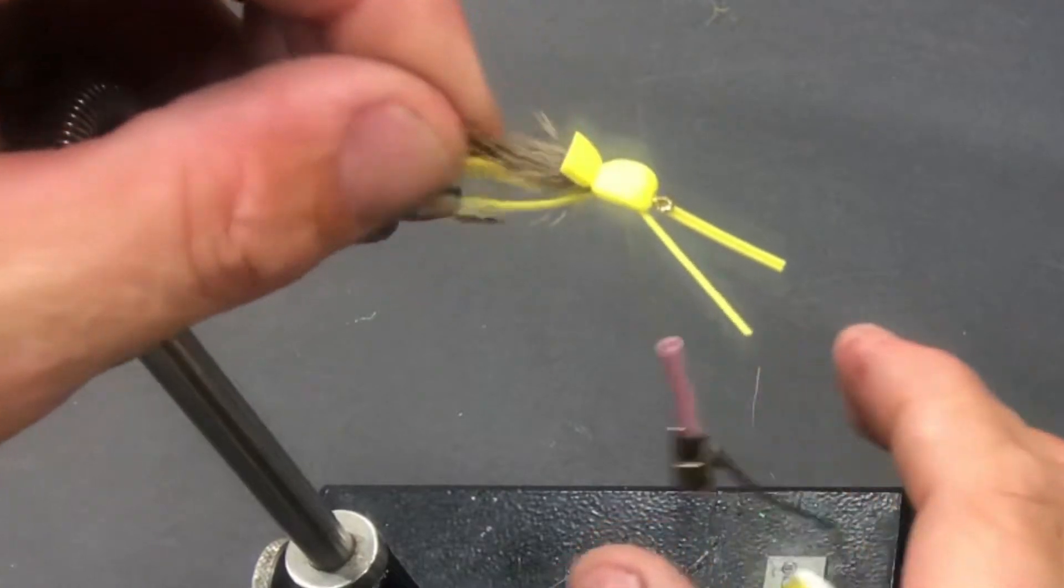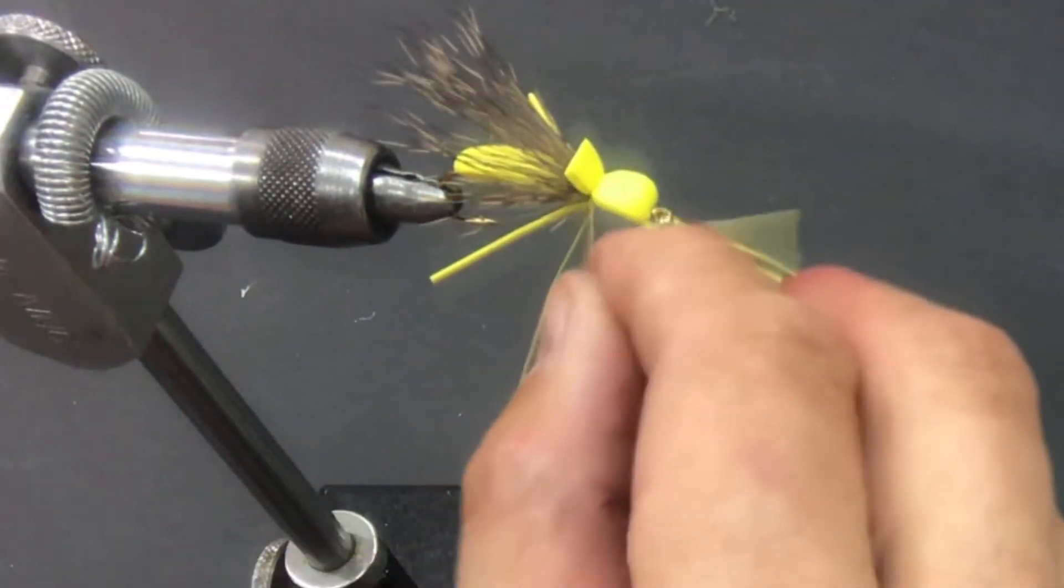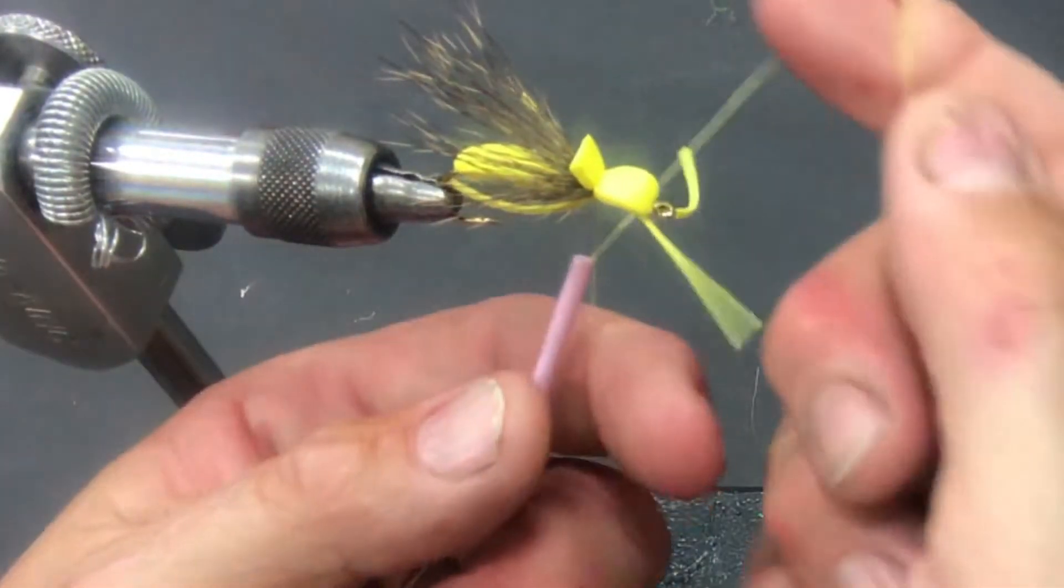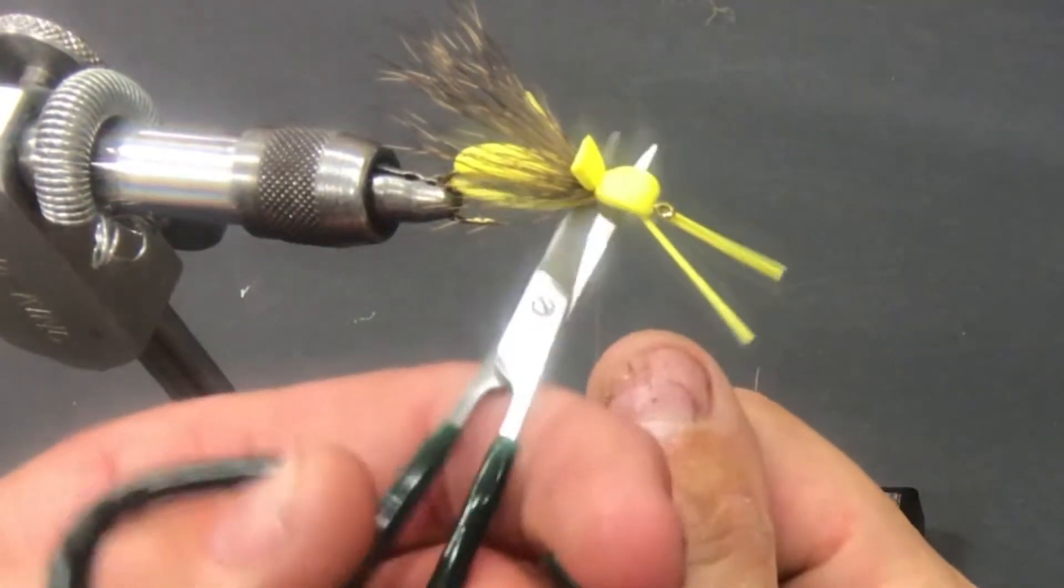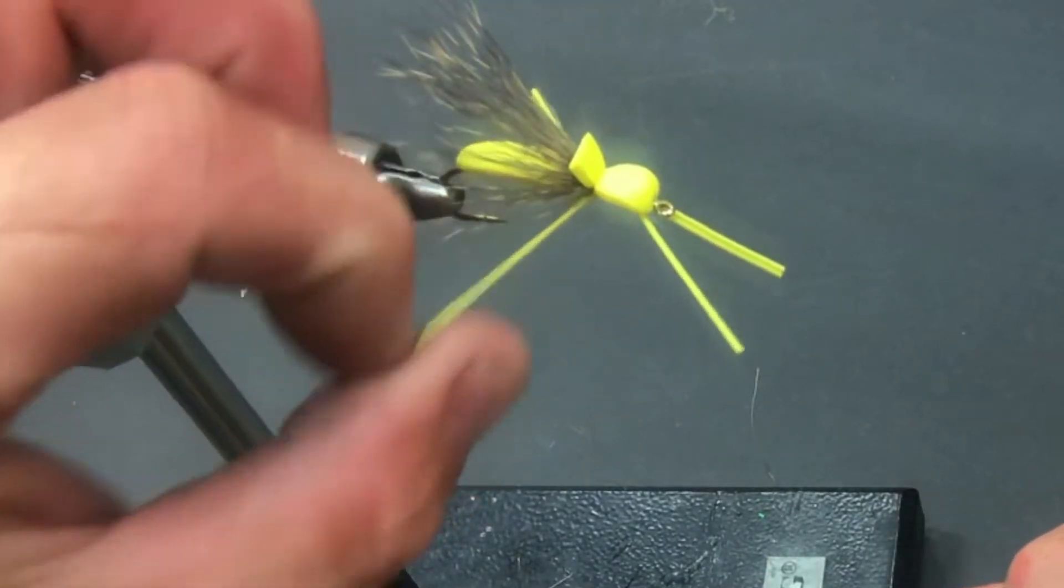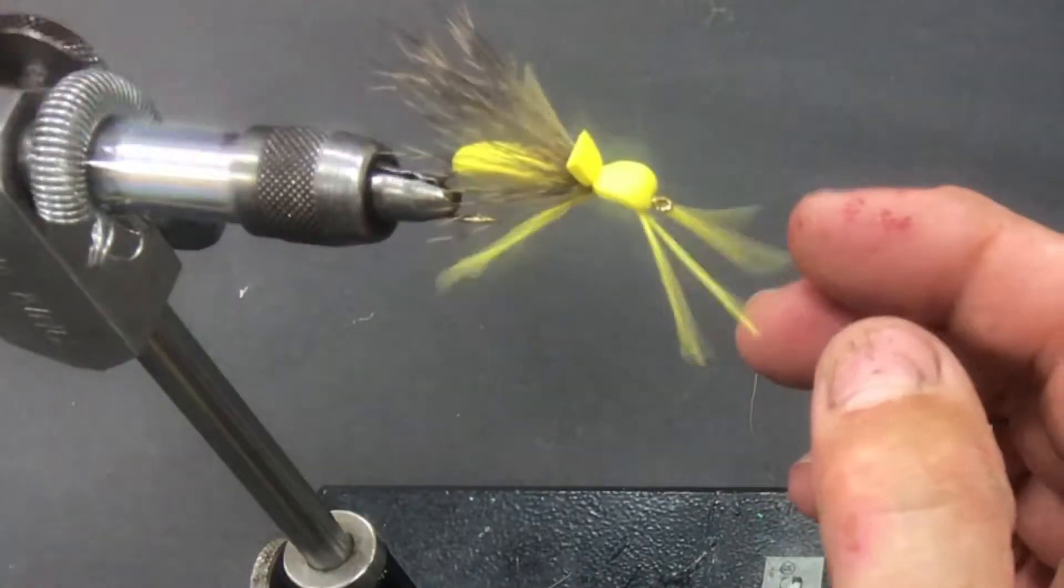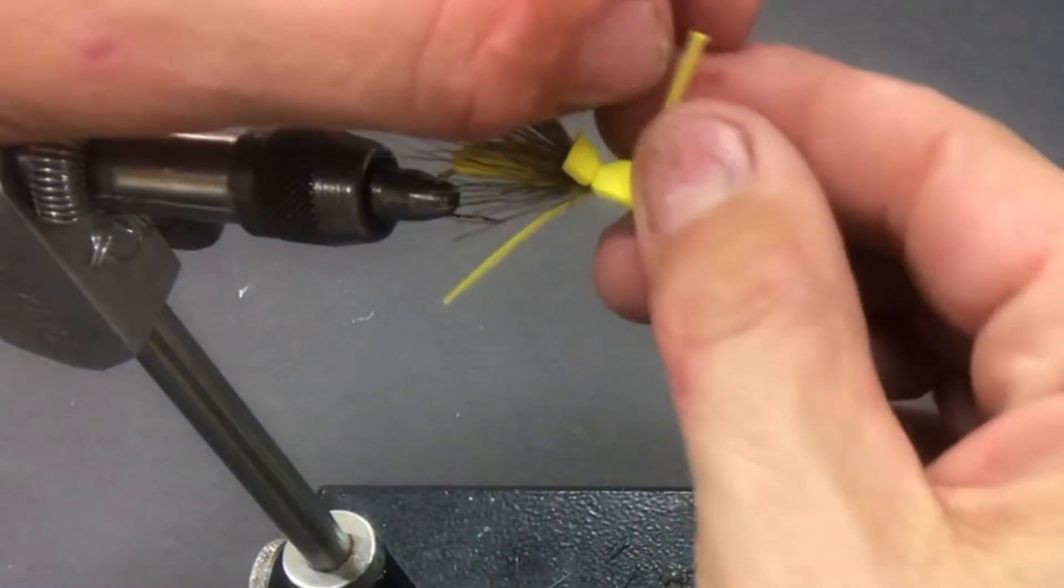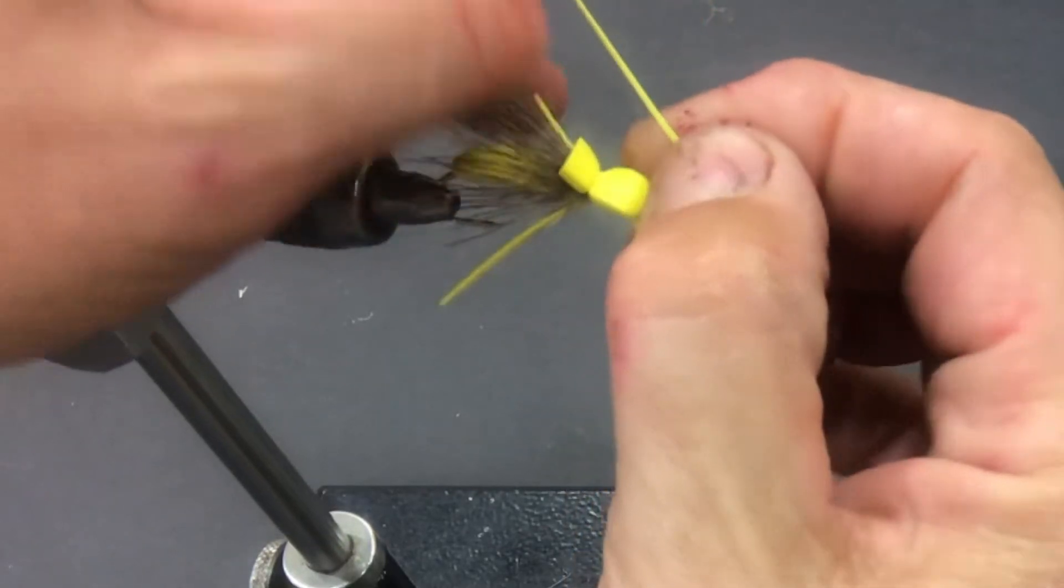Now to finish the fly, you cannot whip finish this because the foam grabs onto the thread. So you're gonna put four half hitches on there. One, two, three, and four, and you're gonna tighten it up. Come in, clip your thread, take your fingers, pop the legs. You'll end up with four on each side. Front two, back two. See if I can get those apart. There we go. And there we go.